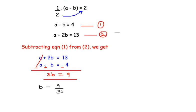b is going to be equal to 9 over 3, which is 3. So we got the value of the smaller number as 3. Now let us find the value of a using the first equation. a minus b, which is 3, equals 4. Taking negative 3 to the other side, we get a equals 4 plus 3, which is 7.